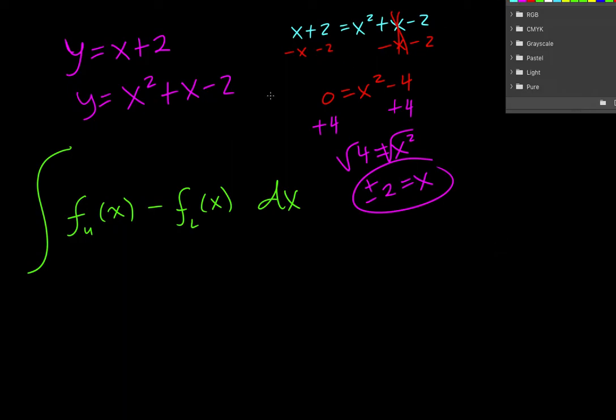So we have a parabola. We have a line. And they cross. This x value is negative 2. This x value is 2. That's what we just found. So those are going to be our limits of integration.